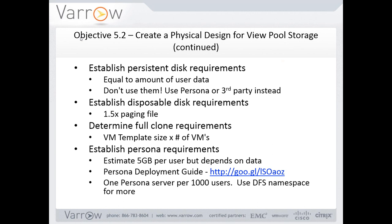The full clone requirements: the biggest use case for full clones is when people need dedicated VMs to install their own apps — developers are a good example. Full clones are a minority in my experience, but some environments use all full clones. As far as sizing, it truly is a full clone of the master VM template — your template size times however many VMs you have is how much space you need. As you can imagine, that eats through capacity quickly. That's one reason I prefer link clones — if I can buy less storage, I will.